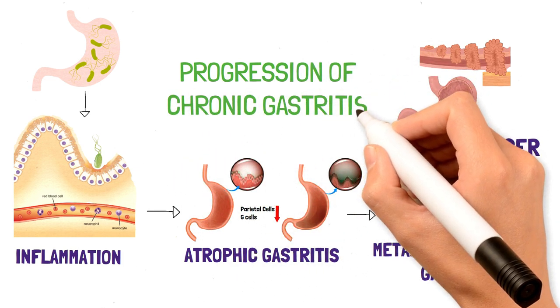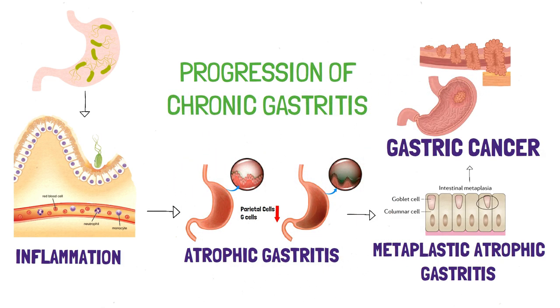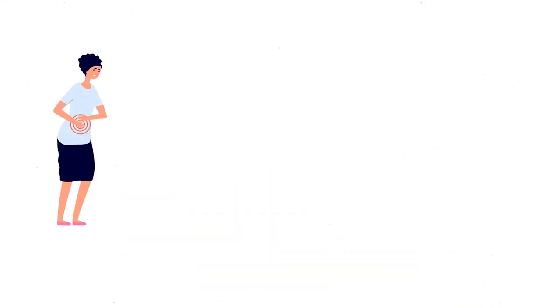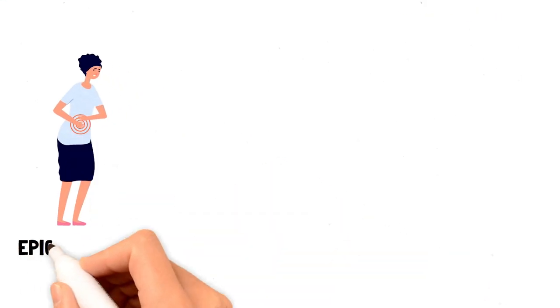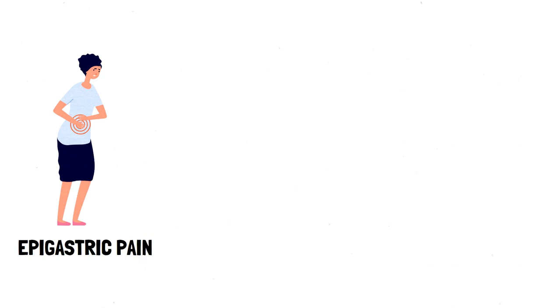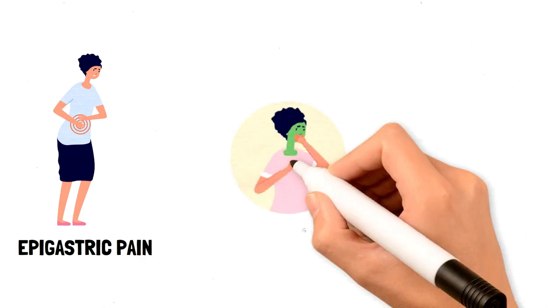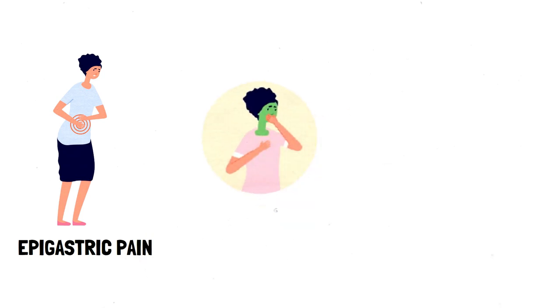Speaking of symptoms, chronic gastritis is virtually similar to acute gastritis. A patient will mainly present with epigastric pain, and also nausea, vomiting, anorexia, and weight loss.